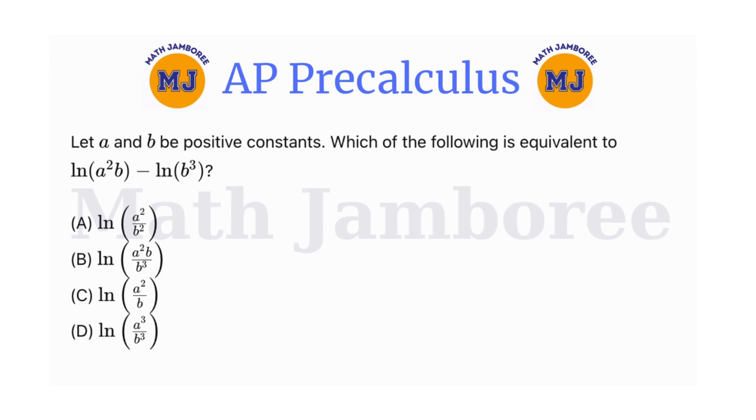Before diving into this problem, let's review some crucial properties of logarithms that will help us. The power rule tells us that natural logarithm of a to the power of b can be written as b times natural logarithm of a, which allows us to move the exponent in front of the log as a coefficient.